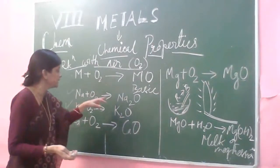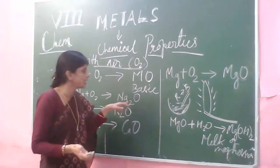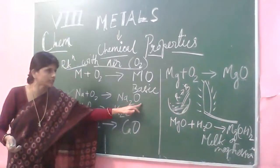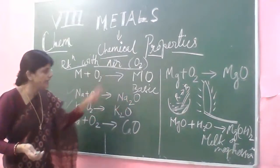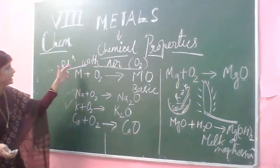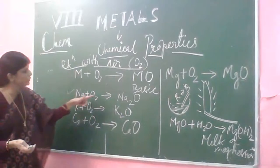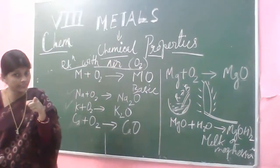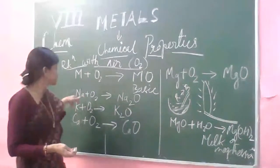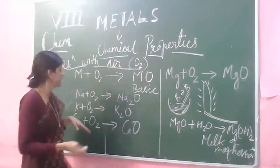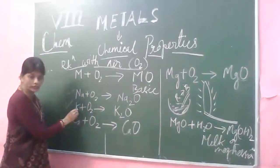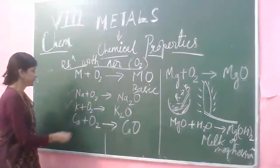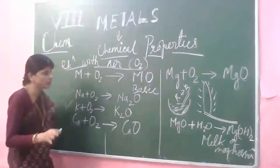Sodium combines with oxygen to give sodium oxide. Sodium oxide is a basic oxide — meaning it is a basic substance. I am not saying it is a base; I will show you when it becomes a base when we study the reaction of metals with water. Similarly, potassium plus oxygen gives potassium oxide — a basic oxide. Calcium plus oxygen gives calcium oxide — also a basic oxide.